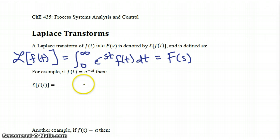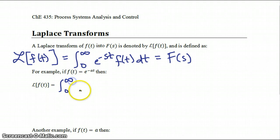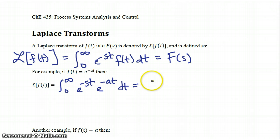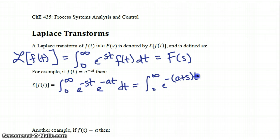For example, if f(t) is equal to e to the minus at, then the Laplace transform of f(t) is equal to the integral of e to the minus st times e to the minus at dt, which is equal to the integral of e to the minus quantity (a plus s) all times t dt.